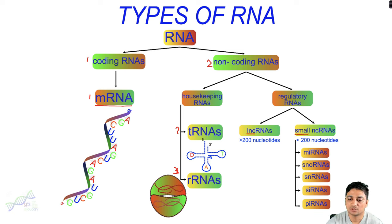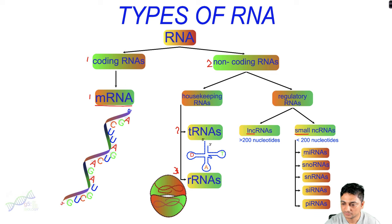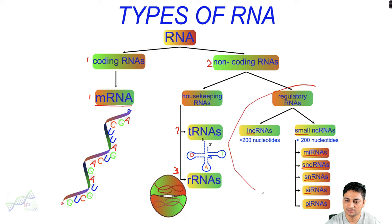Long non-coding RNAs are molecules that have more than 200 nucleotides in length. Small non-coding RNAs are less than 200 nucleotides in length, around 20 to 50 base pairs in size. These include miRNAs, snoRNAs, snRNAs, siRNAs, and piRNAs. We are going to talk about all these RNAs in the next video.